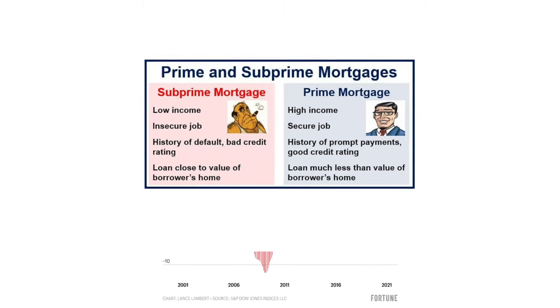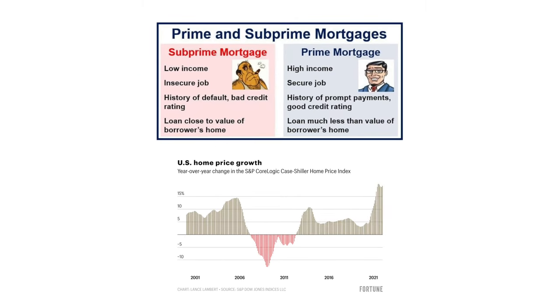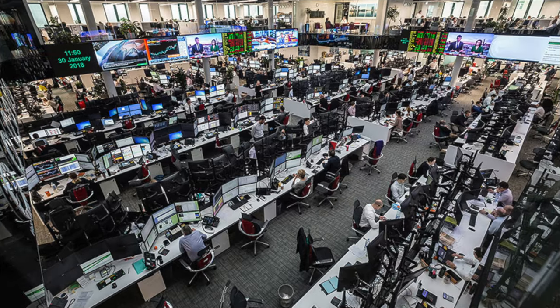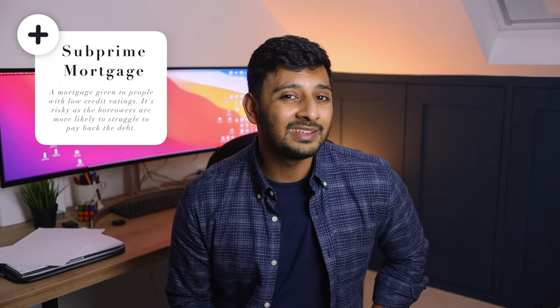The first factor is subprime mortgages. 'Sub' means below, 'prime' means the best or premium, so subprime is below the best — below average. Many people with poor credit history were given subprime mortgages, i.e. loans to buy homes that they eventually couldn't afford. These loans were also packaged into financial securities that investment banks were investing in.